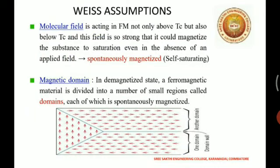Weiss in 1907 proposed domain theory to explain the properties of ferromagnetic material. That is the spontaneously magnetized small regions where all the magnetic moments are aligned in the same direction. So this picture represents a domain in which all domains are arranged in the same direction.